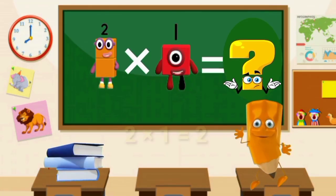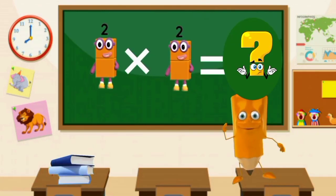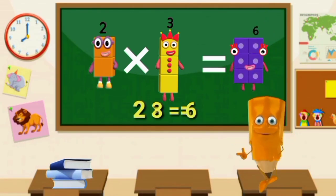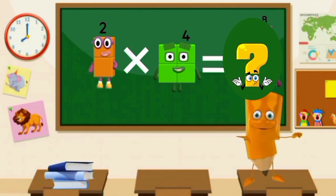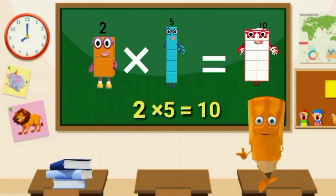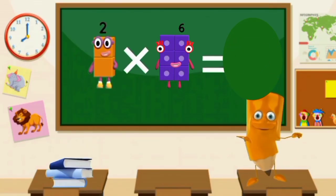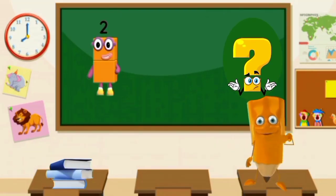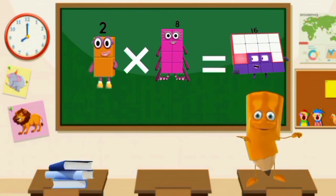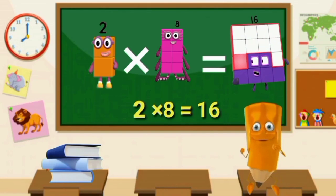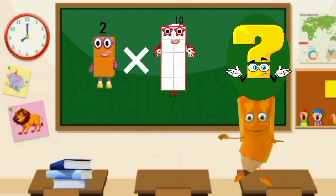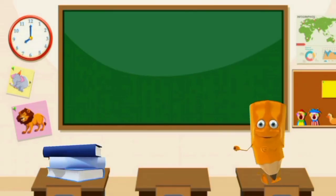2 times 1 equals 2. 2 times 2 equals 4. 2 times 3 equals 6. 2 times 4 equals 8. 2 times 5 equals 10. 2 times 6 equals 12. 2 times 7 equals 14. 2 times 8 equals 16. 2 times 9 equals 18. 2 times 10 equals 20. Bye-bye.